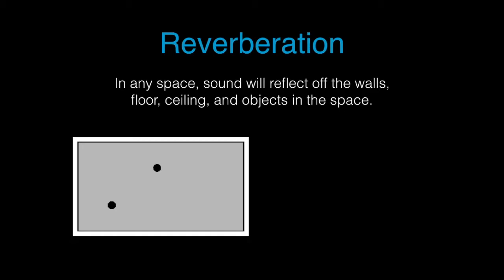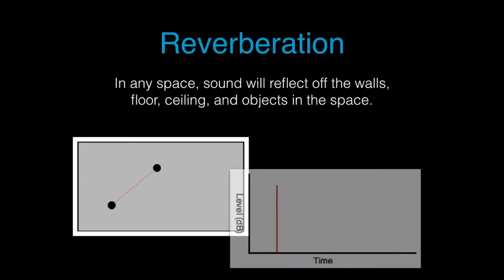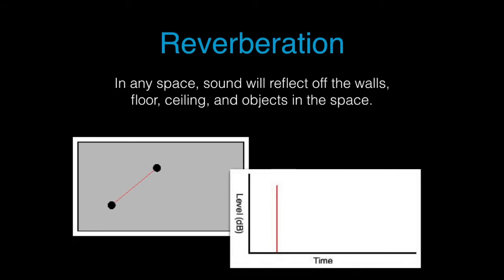Initially, there's a direct sound — it takes a direct route from the sound producer to the listener. Next, we have the sounds that reflect off surfaces. These sounds are taking longer to get to the listener, and so they're going to take more time.